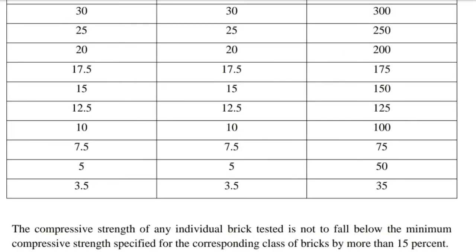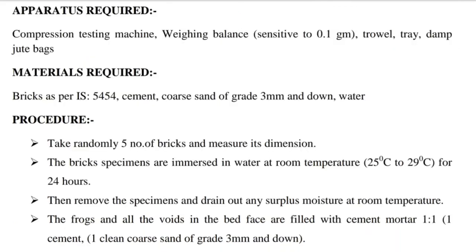The compressive strength of any individual brick tested is not to fall below the minimum compressive strength specified for the corresponding class of bricks by more than 15%. Apparatus required: Compression testing machine, Weighing balance sensitive to 0.1 g, Trowel, Tray, Damp jute packs. Materials required: Bricks as per IS 5454, Cement, Coarse sand of grade 3 mm and down, Water. Procedure: Take randomly 5 bricks and measure their dimensions.